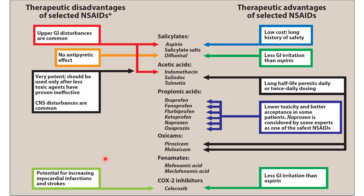Every non-steroidal anti-inflammatory drug has its advantages and disadvantages. Aspirin is the most inexpensive and most investigated, but causes common GI disturbances. Diflunisal has less GI disturbances but no antipyretic effect. Acetic acid derivatives include indomethacin, sulindac, and tolmetin — these are long-acting but very potent and toxic, with some central nervous system disturbances.